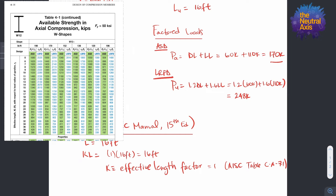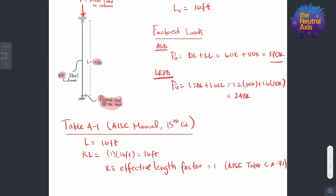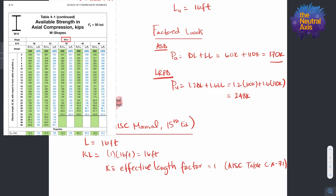The problem asks for a W12, so we flip to page 4-18 where the W12 sections are listed. Going to the row for kL = 16 feet, the available strengths are quite large — a W12×190 has an ASD available strength of about 1,300 kips, which far exceeds our requirement. We want an efficient design, so we continue left to right along the 16-foot row into the next pages, looking for an available strength close to our ASD required strength of 170 kips. On page 4-20, a W12×40 at kL = 16 feet shows an ASD available strength of 171 kips.